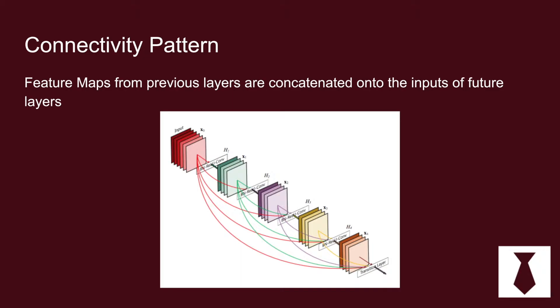This connectivity pattern is the main idea behind DenseNets. Put simply, the input to the next layer is the concatenation of all the previous layer inputs. So in layer x3, the input is the output from x2, the output from x1, the output from x0, and the original input — all concatenated to make one really deep feature map with the same spatial resolution.